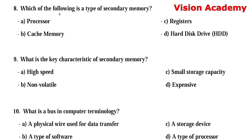Question number 8: Which of the following is a type of secondary memory? Option A: processor. Option B: cache memory. Option C: registers. Option D: hard disk drive — in short, we call it HDD. The right answer is Option D, hard disk drive.